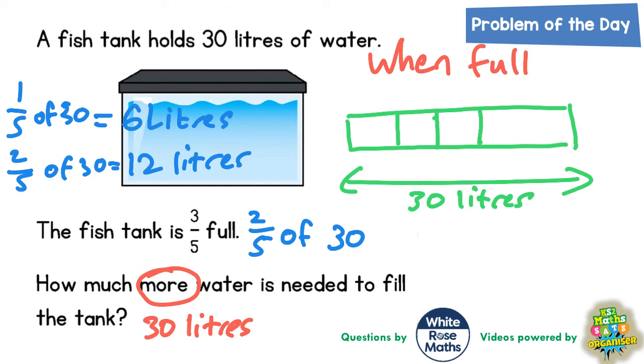Now this obviously tells you that 30 is being split into five pieces. So if you do 30 divided by five, you get six in each piece. So if you write six in each piece like that, and then read back what's in the question, it says the fish tank is three fifths full.